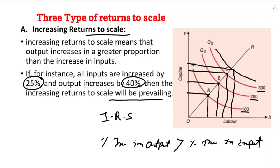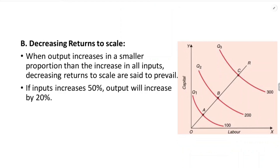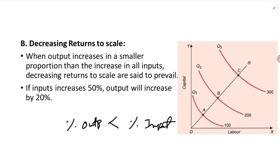This is about increasing returns to scale. The second one is decreasing returns to scale — when output increases in a smaller proportion than the increase in all inputs. Decreasing returns to scale are said to prevail when the percentage increase in output is less than the percentage increase in input.